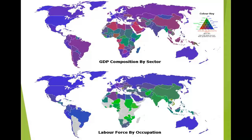Looking at GDP composition by sector and the labor force by occupation, we can see similar ideas. The map shows agriculture in green, services in blue, and industry in red, illustrating where those different sectors are distributed across the globe.